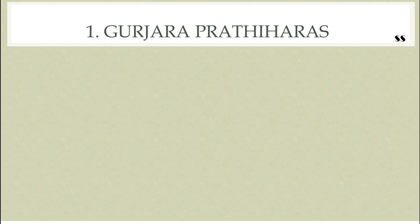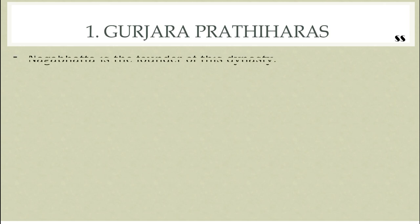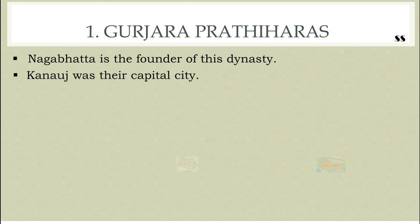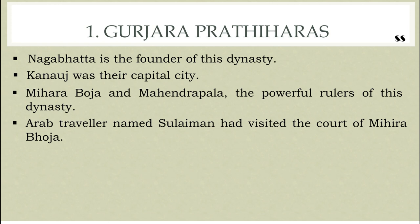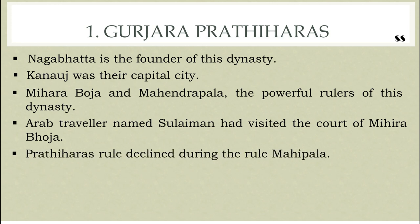The Pratiharas claimed in many of their inscriptions that Lakshmana of the Ramayana period, a Kshatriya of Suryavamsha, was the founding person of their family. But as per available evidence, Nagabhatta is the founder of this dynasty. The Pratiharas ruled the Sindh region keeping Kanauj as their capital. They fought back frequent Arab attacks. Powerful rulers Mihirabhoja and Mahendrapala defeated the Palas of Bengal and extended the Pratihara kingdom to Bengal. An Arab traveler named Suleiman visited the court of Mihirabhoja and appreciated the kingdom for its peace. Pratihara rule declined during the rule of Mahipala, who succeeded Mahendrapala.